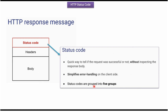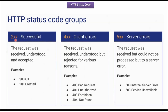Status codes are grouped into five groups. The first group is the 200 series, which is successful. The client sent a request to the server; the server received, understood, and accepted the request. Examples of 200 series status codes are 200 meaning OK and 201 meaning created.